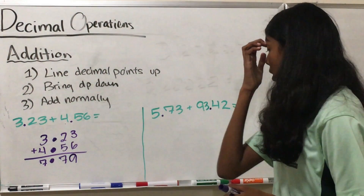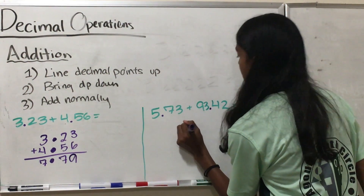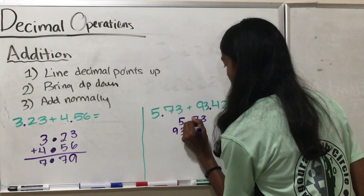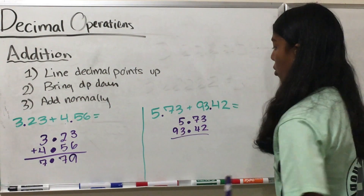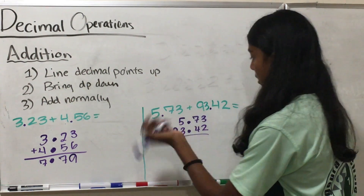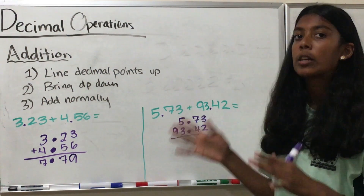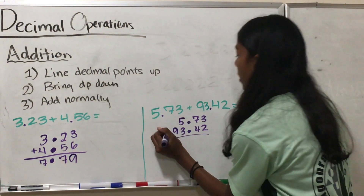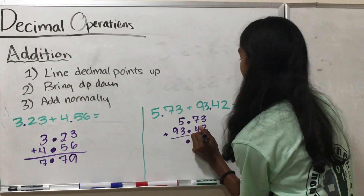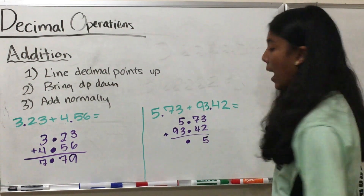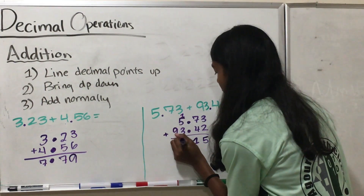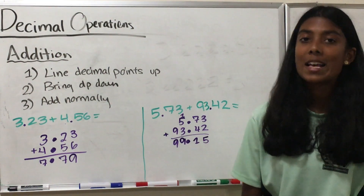Now let's try a harder example. We first line the decimal points up and write accordingly. Notice that this is 93.42, so the 3 corresponds with the 5, and the 9 is in a separate column. Writing numbers in incorrectly can ruin the entire problem. Now bring the decimal down and add: 3 plus 2 is 5; 7 plus 4 is 11, so we carry the 1; 1 plus 5 plus 3 is 9; and 9 plus 0 is 9. So we have 93.15 as our answer.